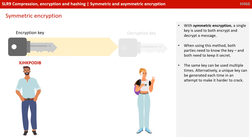With symmetric encryption, a single key is used to both encrypt and decrypt the message. When using this method, both parties need to know the key, and both need to keep it secret. The same key can be used multiple times. Alternatively, a unique key could be generated each time in an attempt to make it harder to crack.